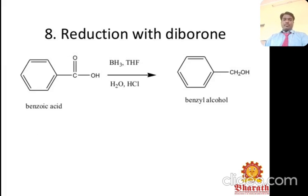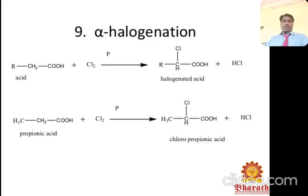Reduction with diborane: benzoic acid reacted with B₂H₆ in HF/HCl medium gives benzyl alcohol. Alpha halogenation: carboxylic acid reacts with chlorine to give a halogenated acid. For example, propanoic acid with chlorine gives chloropropanoic acid.